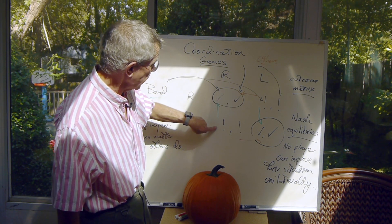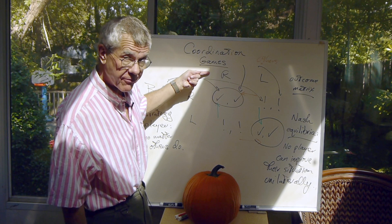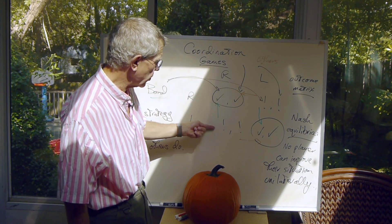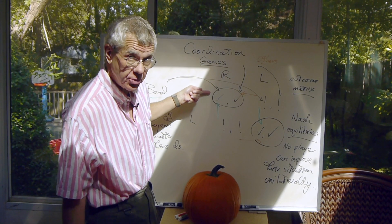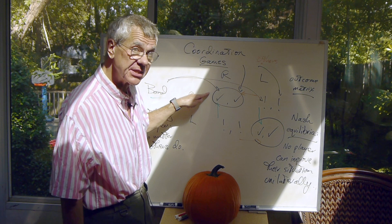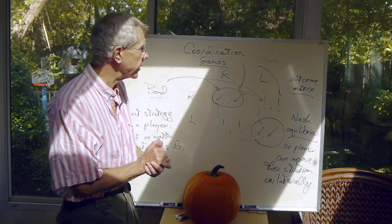On the other hand, if Bond is driving on the left, and everybody else is driving on the right, then Bond can improve his situation unilaterally by switching to do what the others are doing. So this is not a Nash equilibrium, but this one is. And I've circled the two Nash equilibria here.